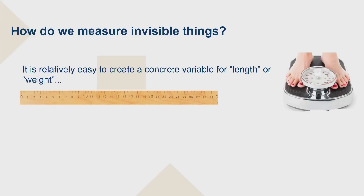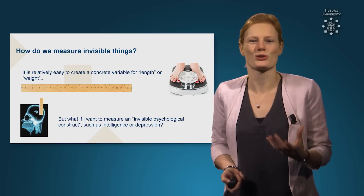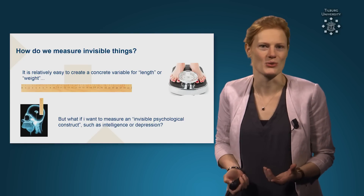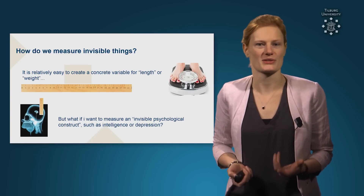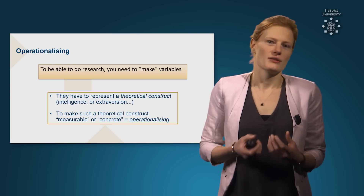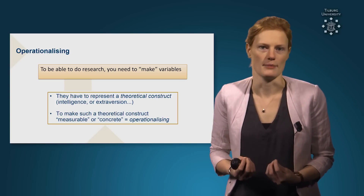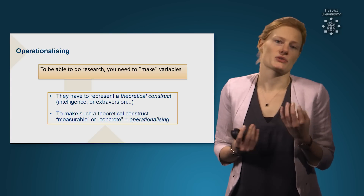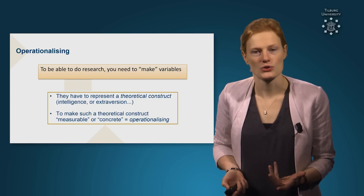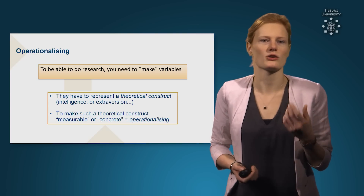That is not always the case. If you think about psychology, how am I going to measure an invisible psychological construct such as intelligence or depression? I can't simply put a ruler next to your head and say how depressed you are. So we need to come up with something else. In psychology, we need to make variables — we need to sort of create them. We have this theoretical construct such as intelligence, extraversion, or depression — something invisible — and we need to make it measurable, we need to make it concrete.